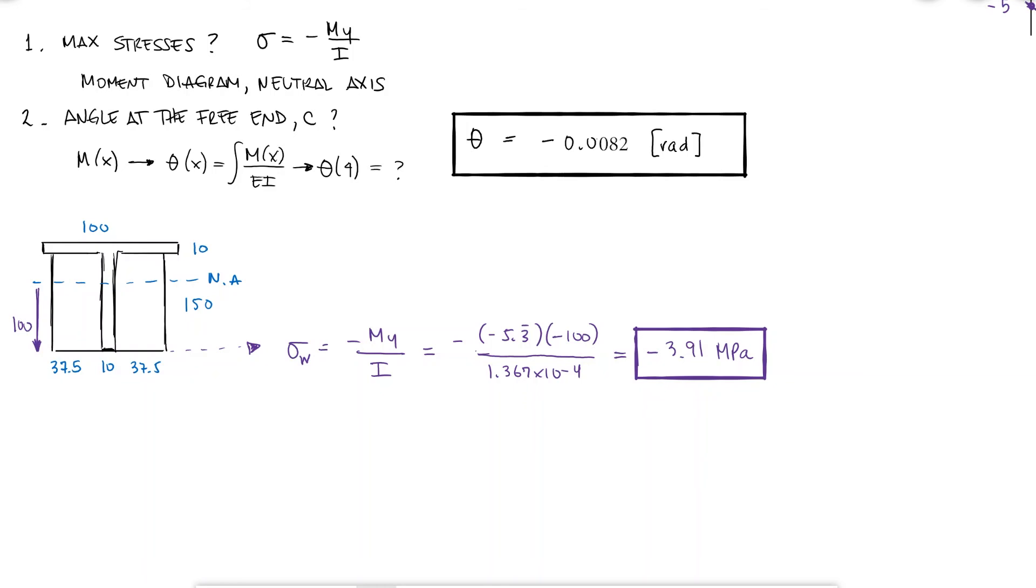This is of course not the maximum stress. At that same bottom location, we also have steel material. And since the strain in both materials is the same, but the steel is 16 times as resistant to deformation, it means that the stress is also 16 times that of the wood.